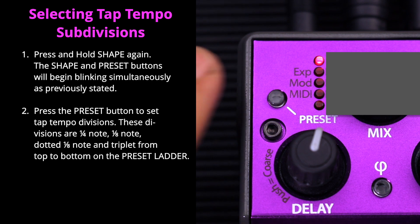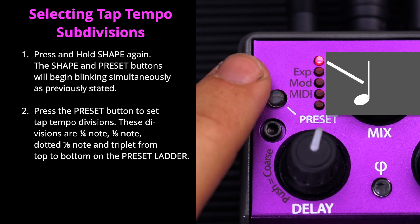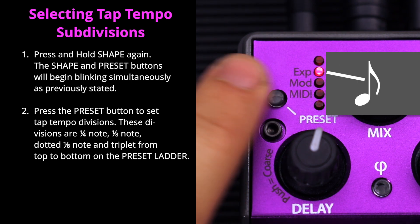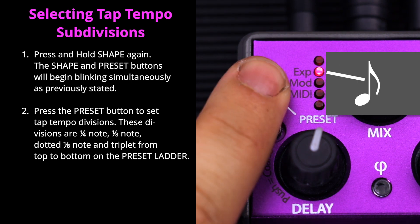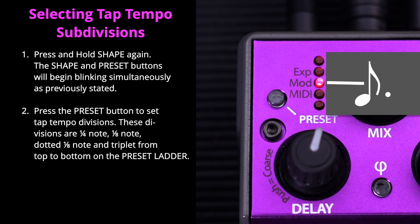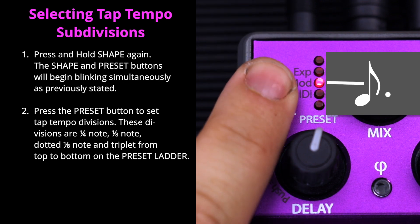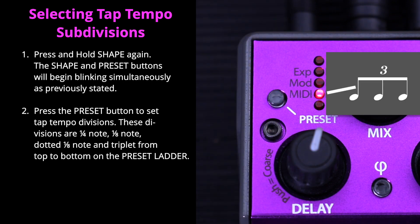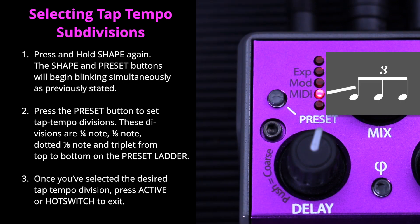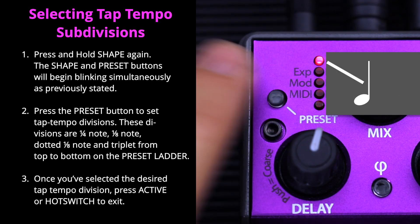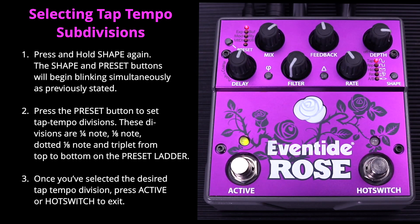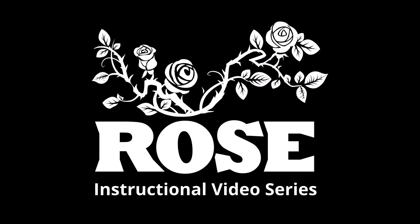These divisions are quarter note, eighth note, dotted eighth note, and triplet, from top to bottom on the preset ladder. Once you've selected the desired tap tempo division, press active or hotswitch to exit.